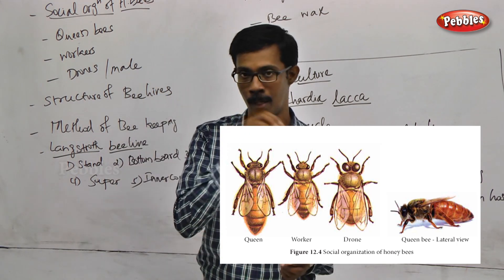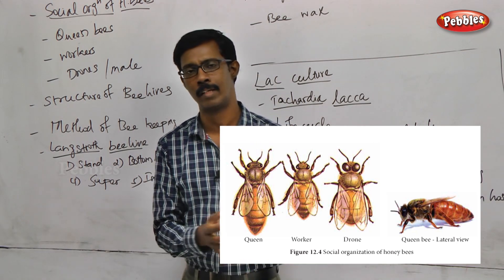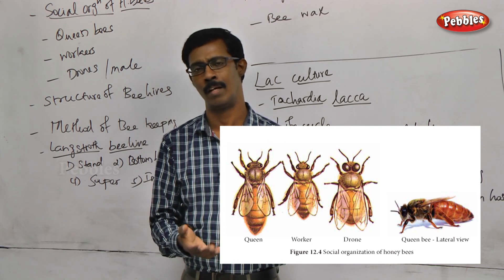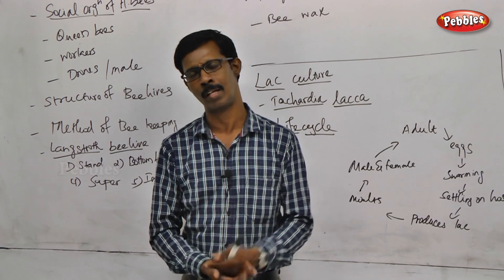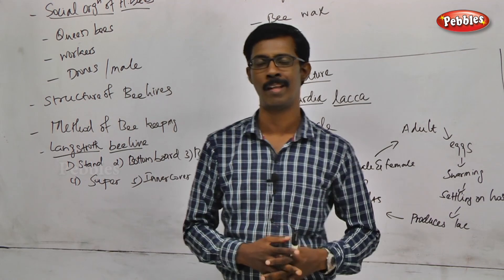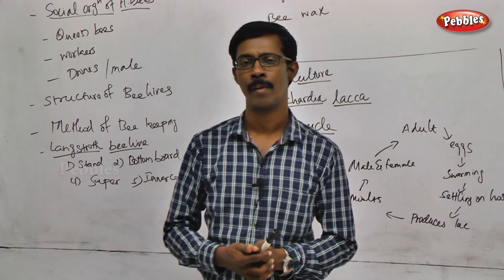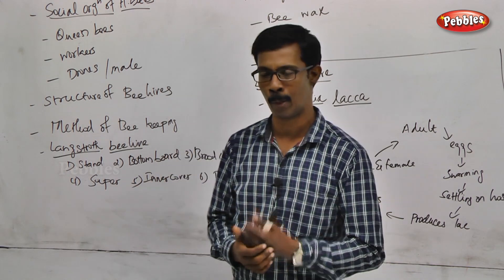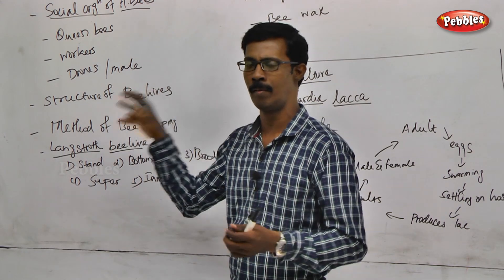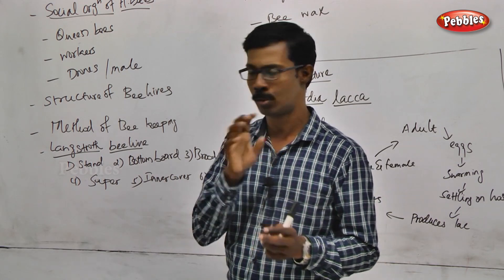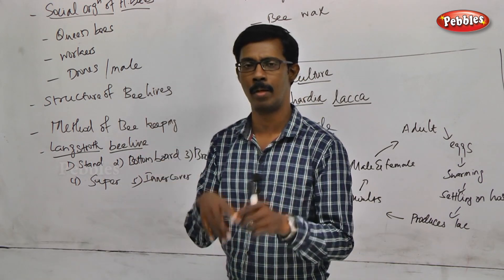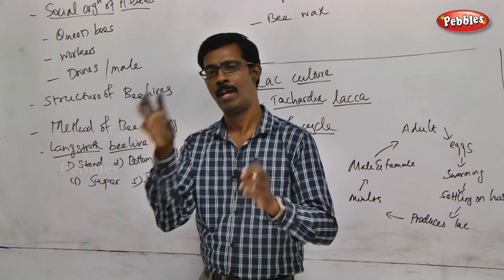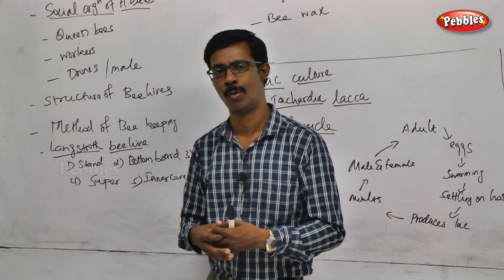The invertase enzyme acts on the nectar, which is a sweet substance containing various types of sugar and organic molecules. The primary sugar is converted by the invertase enzyme. The honey is then stored in the beehive cells in a hexagonal shape.